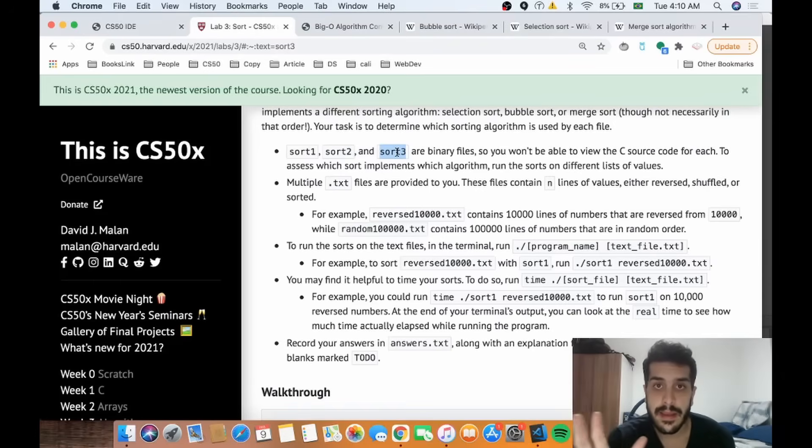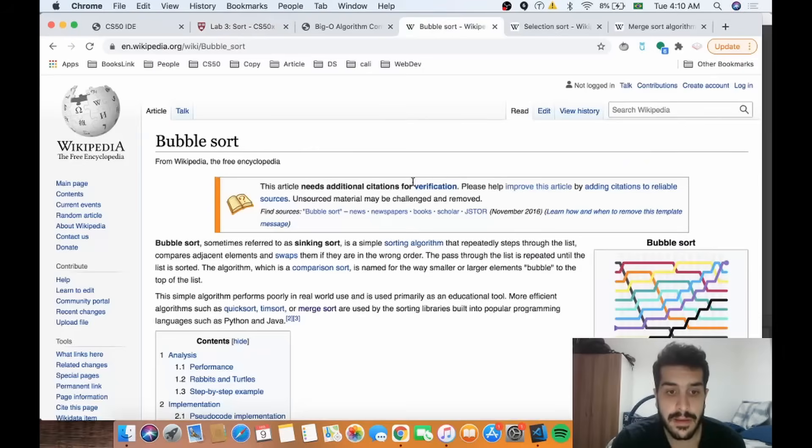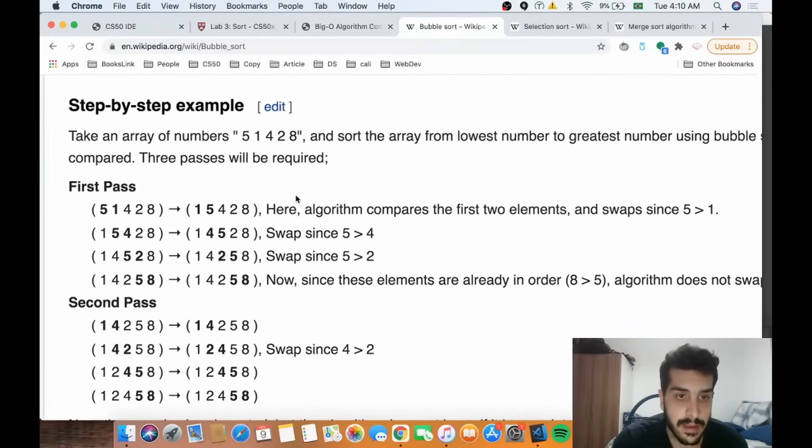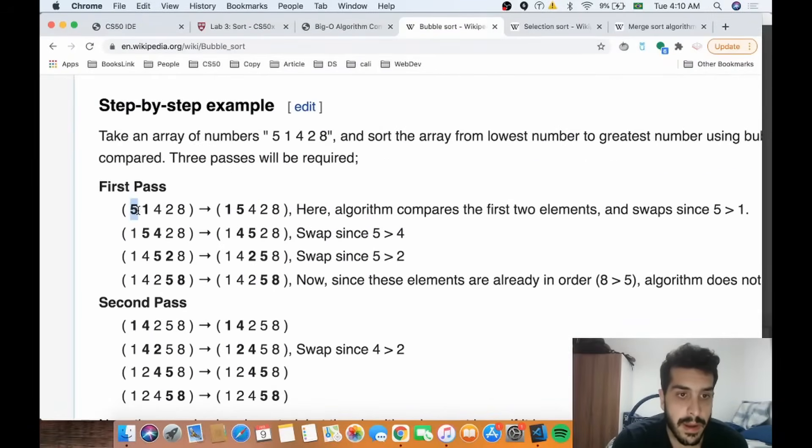So we need to have a good understanding of how each one works. Bubble sort works like that - so basically we compare adjacent values. Let's say this is our array. We'll compare 5 with 1. Since 5 is greater than 1, 5 goes to the right of 1. Then we compare 5 with 4.